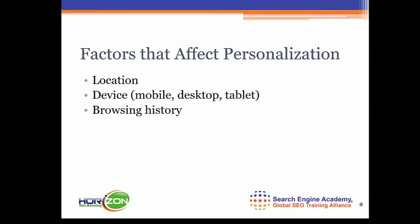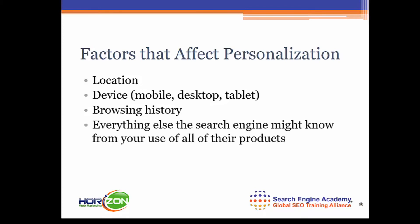What websites have you shown a preference for in the past? And then finally, everything else the search engine might know from your use of all their products. When it comes to Google, there are a lot of products you log into with your Google ID, and that gives Google a clue as to things you like and what you want to see — and they're always trying to give you what you want to see.